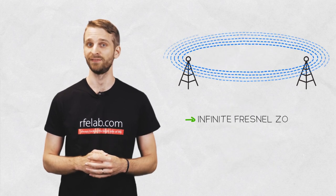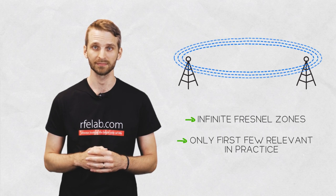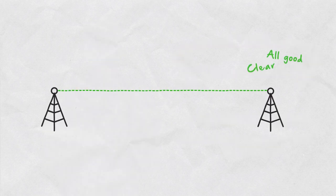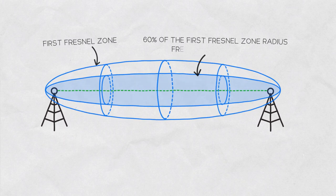The number of Fresnel zones isn't finite, but for practical use we only care about the first few ones. For good operation of an RF link, the line of sight should be clear and at least 60% of the first Fresnel zone should be free of obstructions.